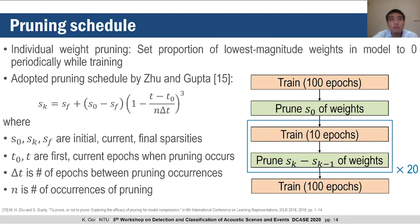After confirming our model architecture, the last step was to train the model. To reduce model complexity, we adopted an individual weight pruning technique, which entails setting a proportion of the lowest magnitude weights to zero in a periodic manner during training. We used a pruning schedule based on a cubic polynomial, where the sparsity at epoch k is defined by that equation. We set the initial sparsity s₀ to 0.1 and the final sparsity sₓ to 0.8, achieving a five-fold reduction in parameter count across all pruned models.